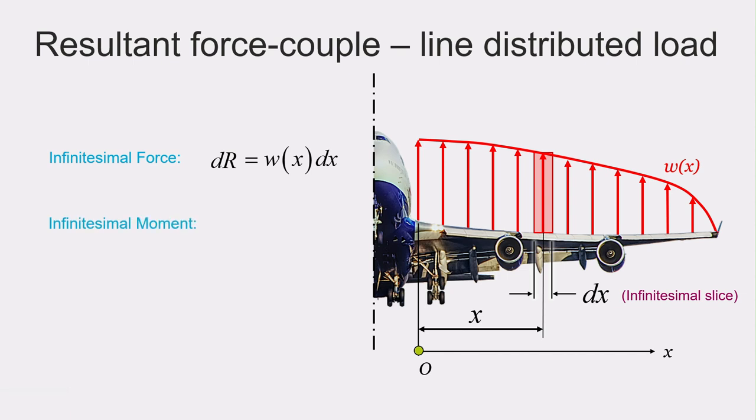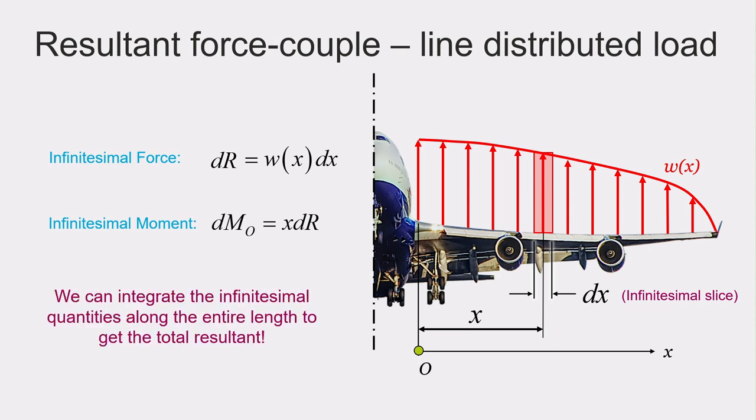The infinitesimal moment due to this infinitesimal force we will denote as dm sub-zero, and it will be equal to our distance x to our infinitesimal force times dr. We can integrate this infinitesimal quantities along the entire length to get the total resultant force and resultant couple acting at x equals zero or point O.